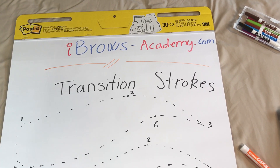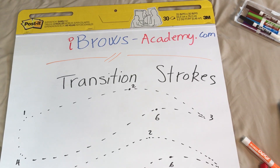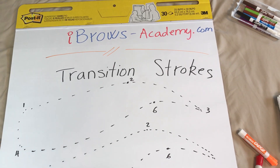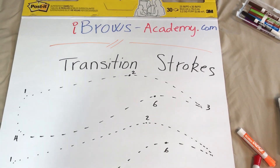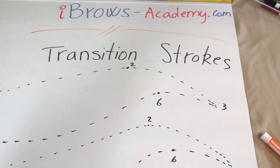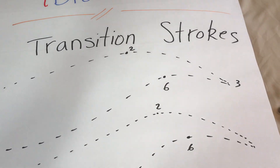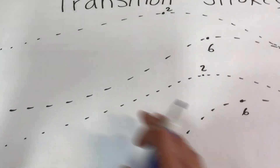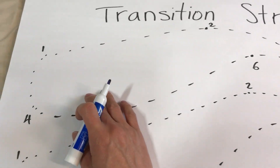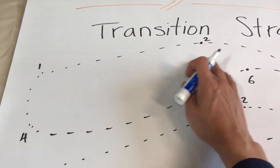Why do we do transition strokes? The whole idea of transition strokes is this. As you can see right here, I have the first brows.